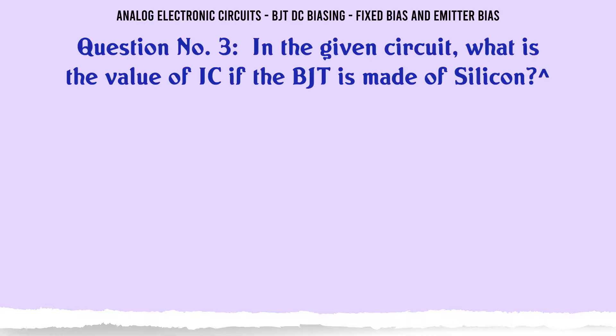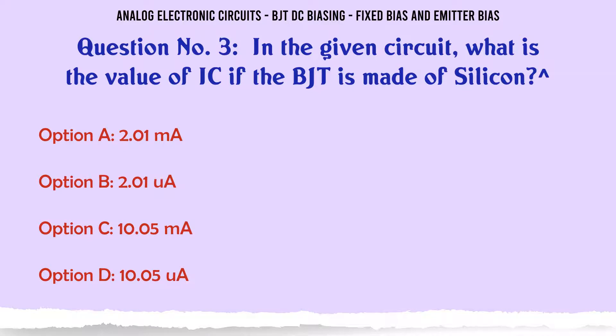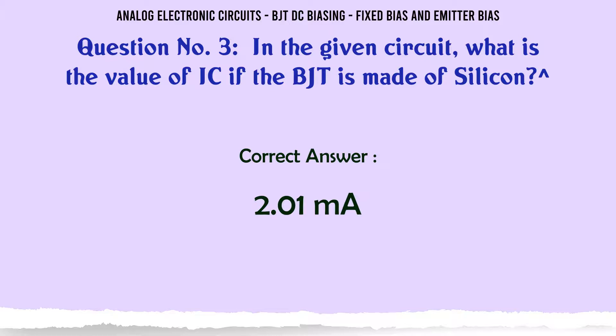In the given circuit, what is the value of IE if the BJT is made of silicon? A: 2.01 mA. B: 2.01 μA. C: 10.05 mA. D: 10.05 μA. The correct answer is 2.01 mA.